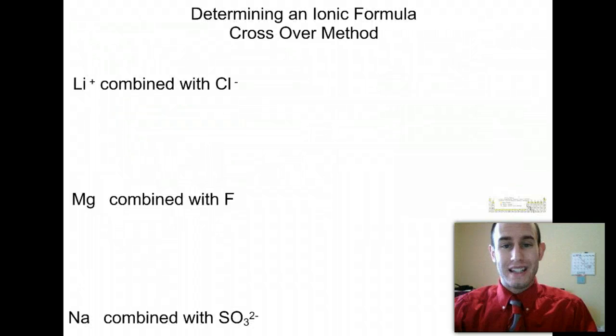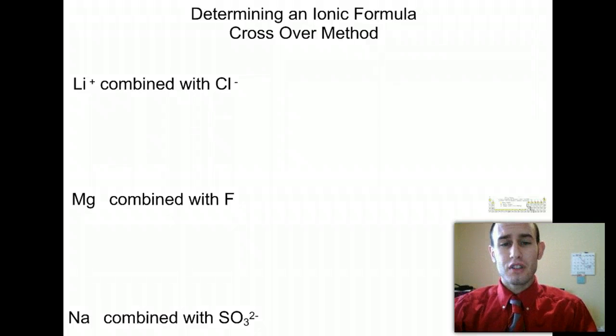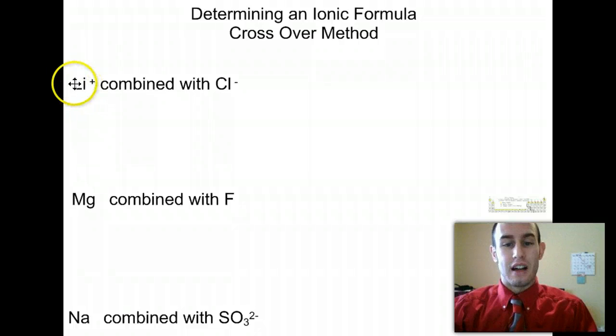So let's go ahead and begin by looking here at this crossover method for determining ionic formulas. So our first example, you're given a lithium plus ion and you're telling to combine it with a chlorine minus ion.